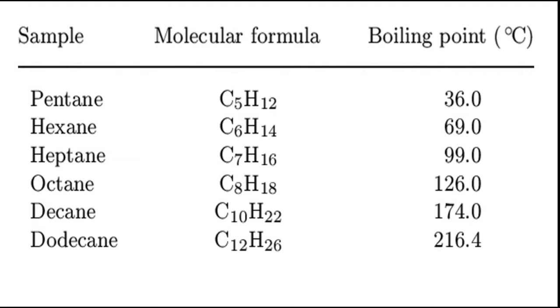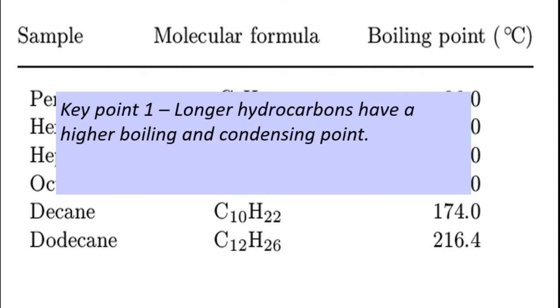I'm only showing up to 12 carbon lengths here but there is a hydrocarbon residue with 70 carbons. Key point number one: longer hydrocarbons have higher boiling and condensing points.